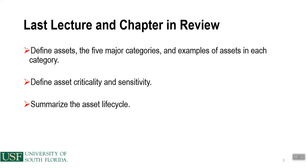In the last lecture, we talked about assets. The information security model has four components: assets, vulnerabilities, controls, and threats. We took a deep dive into what assets are, covering the five major categories — hardware, software, and so on — and provided examples for each. We also defined asset criticality and sensitivity, how to use those ratings on our networks, and summarized the asset lifecycle from procurement through retirement.